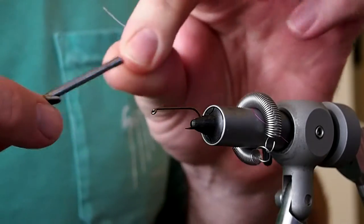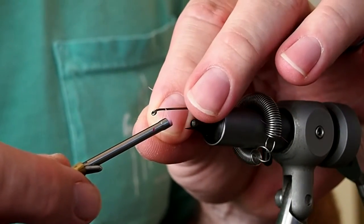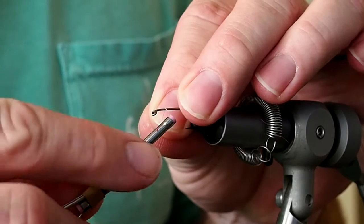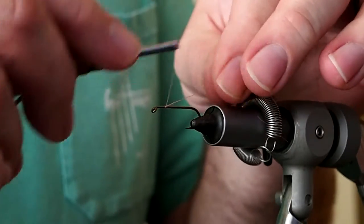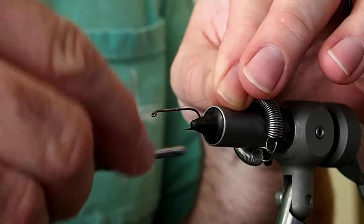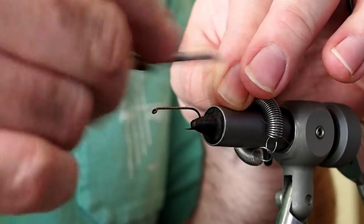To start the fly I'm going to start a good 2 eye lengths behind the eye. You want to leave some room because we're going to tie on some bead chain at the end of the fly. So I'm just going to take my thread down to the barb.